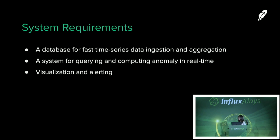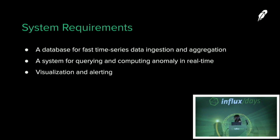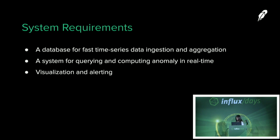After forming our initial approach to anomaly detection, the next step is to think about productionizing it in our system so we can build an intelligent alerting system without humans watching it. The system requirements include: a database for fast time series aggregation and ingestion in real time; a system to send queries to the time series database and compute anomalies in real time; and other components including visualization and alerting.